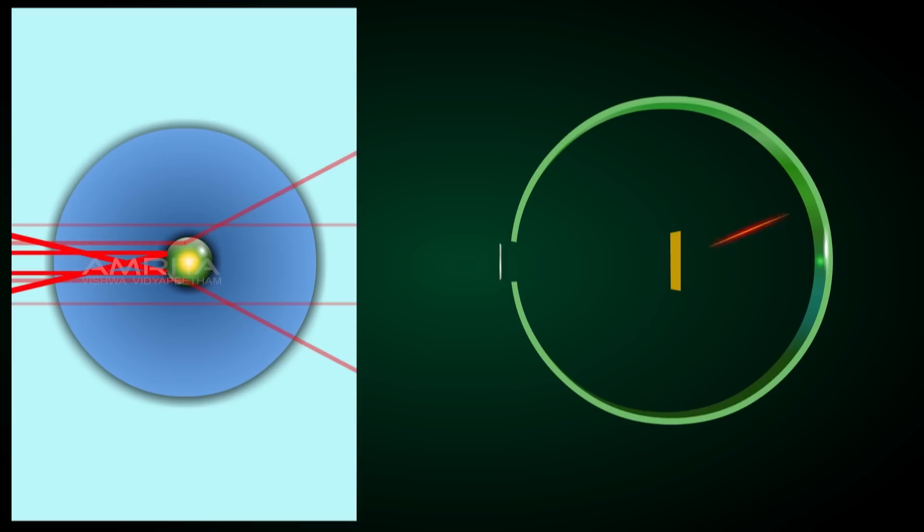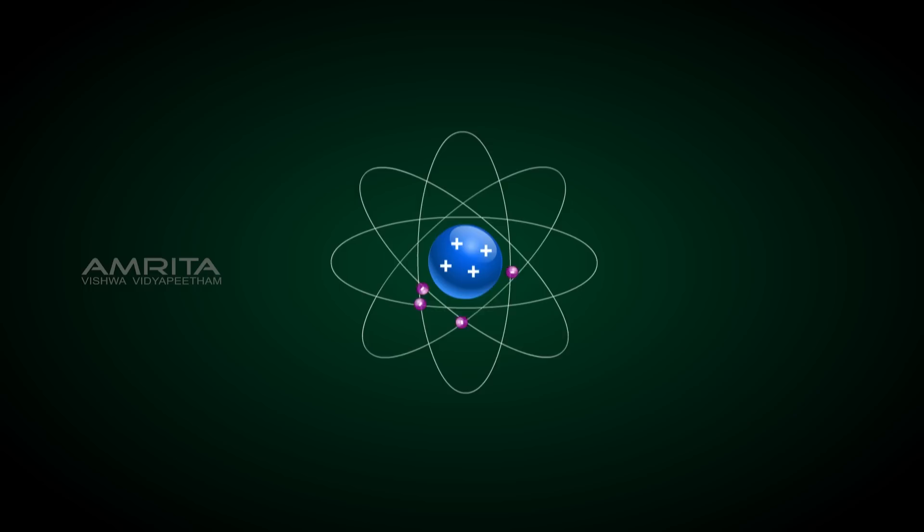Based on these observations, Rutherford put forward the nuclear model of an atom which has the following features. There exists a positively charged center in an atom called the nucleus, and nearly all the mass of an atom is concentrated in the nucleus.